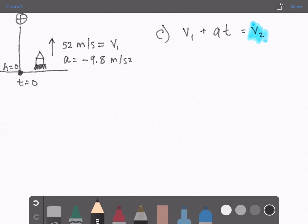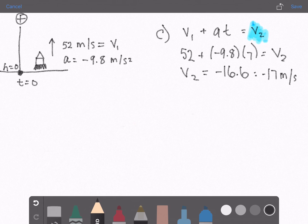So v1 is 52 plus a is negative 9.8, time is 7, equals v2. V2 will equal negative 16.6 and that rounded is negative 17. Since we found velocity the units is meters per second.